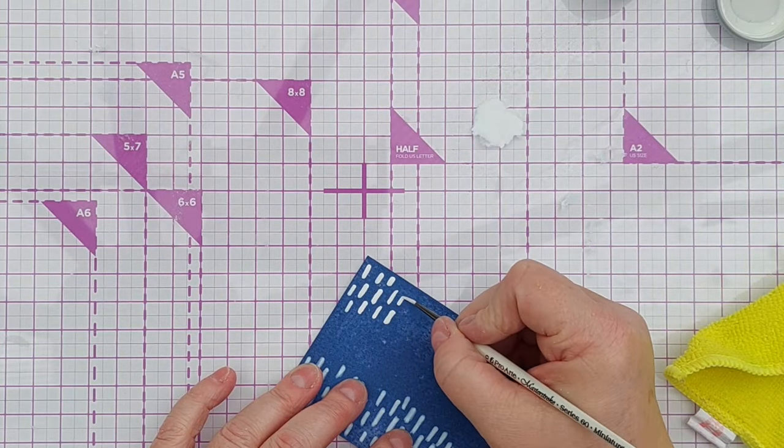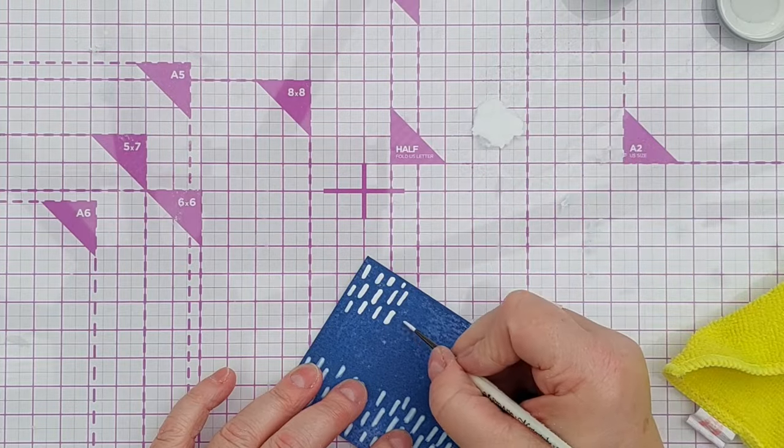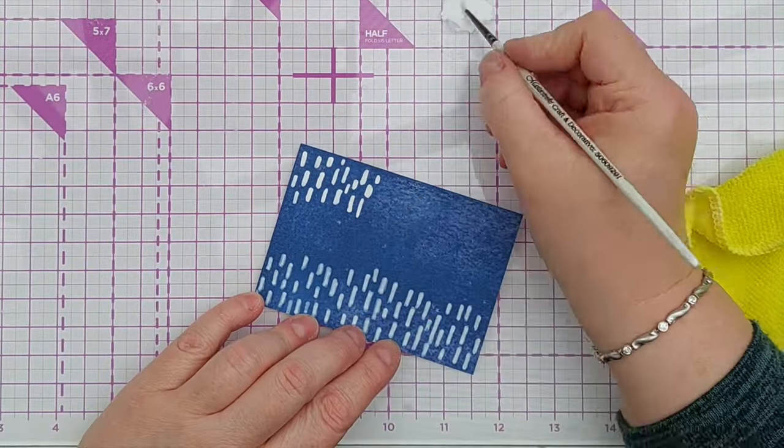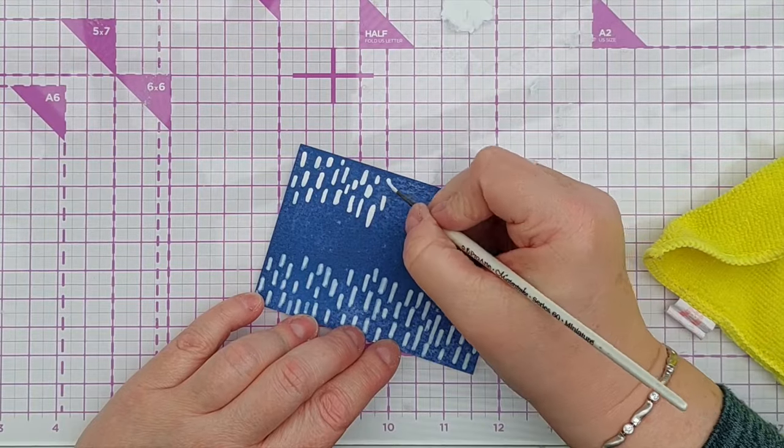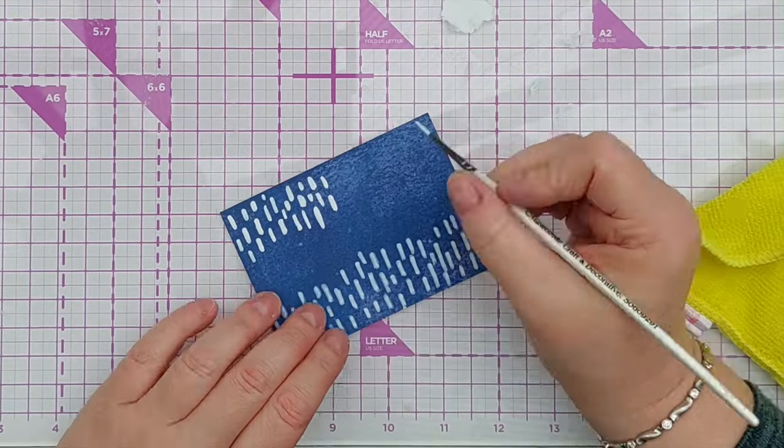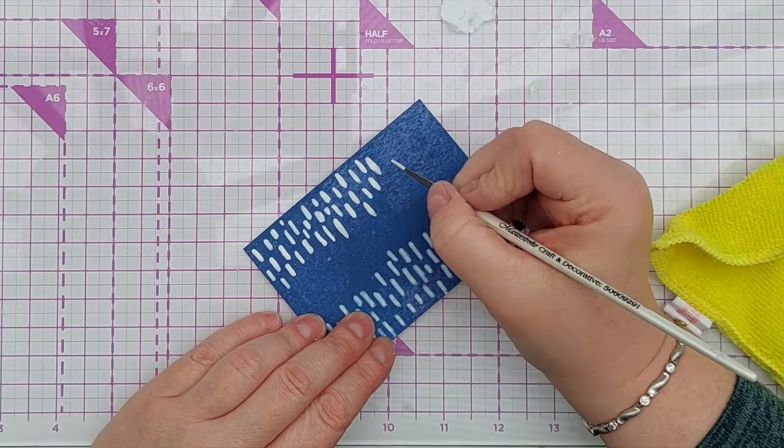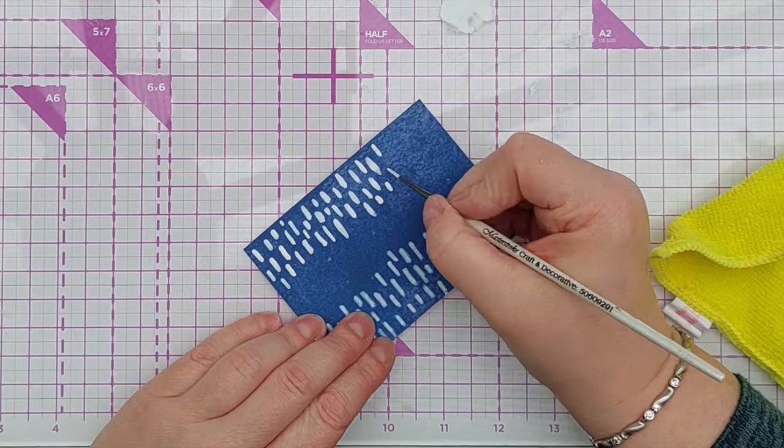The white marks did absorb some of the blue, so I could have done a second coat, or I could have done a few marks, given them a blast with my hair dryer, and then done a few more marks and dried them, and then a few more marks and dried them, so that the bleed proof ink didn't have a chance to pick up much of the blue.